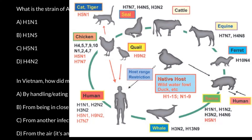Another variant, the virus strain H5N1, we got from birds — it's called bird flu. Other animals like pigs also have this virus, but we call it bird virus or avian flu because birds are the reservoir for this virus. So the correct answer to question one is answer C.